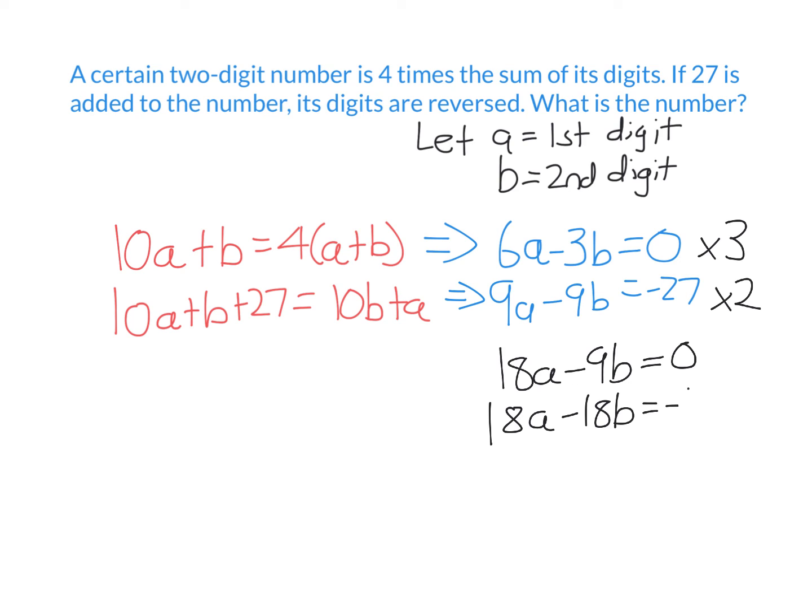Now the A's have the same coefficient in both equations. To get rid of the A's, I subtract. So 18A minus 18A is zero—that's why I did it, to get rid of the A's. Negative 9B subtract negative 18B gives me positive 9B. Zero subtract negative 54 is positive 54. So I found out B equals 6.